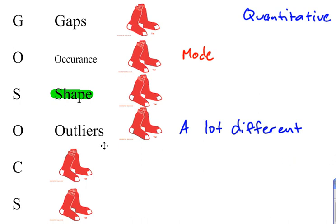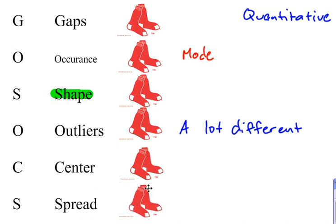The next letter that we have in Go Socks is the center. We want to describe where is the center of the data. And then finally the last one is the spread.